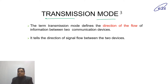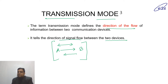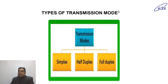Transmission mode tells the direction of the flow of data — from where to where the data is travelling. For example, device A to device B, B to A, or bidirectional. This type of mechanism is known as transmission mode. It tells the direction of signal between two devices. There are three types of transmission modes: simplex, half duplex, and full duplex.